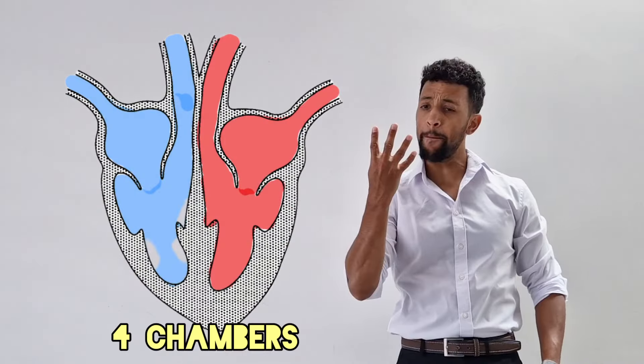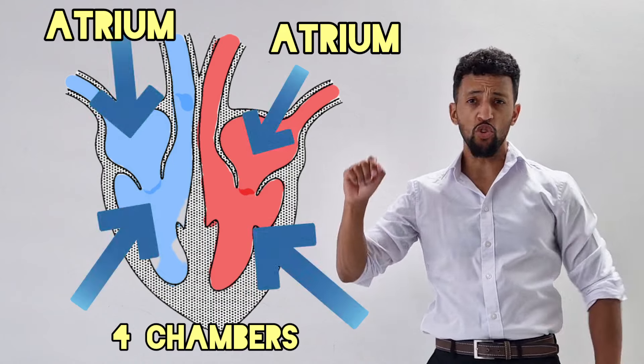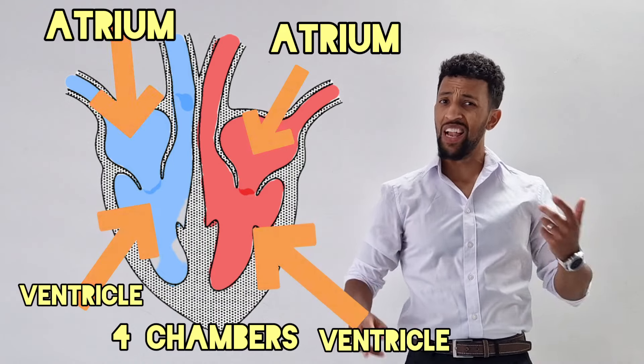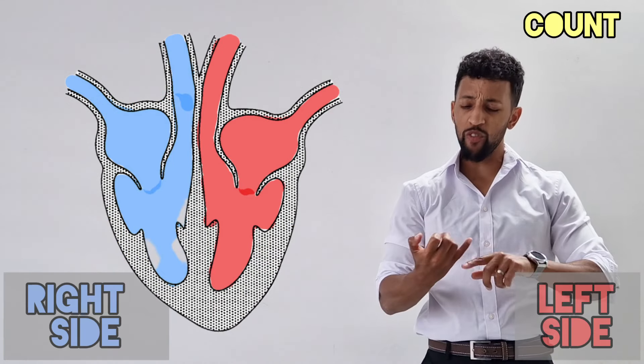Four chambers, let's look at them all — two atria and two ventricles. Left side's big and right side is small. Count with me, four blood vessels.